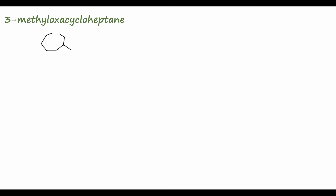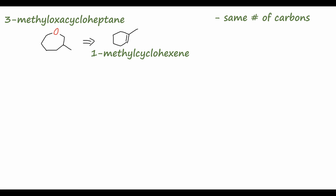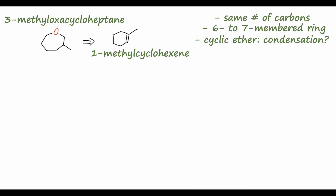Let's look at the more difficult retrosynthesis: the synthesis of 3-methyl-oxacycloheptane, a cyclic ether, from 1-methyl-cyclohexene, our starting alkene. Interestingly, we have the same number of carbons in both, but we do have a ring enlargement — starting with a six-membered ring and ending with a seven-membered ring. So we'll have to break the six-membered ring and reform a seven-membered ring. We've also added oxygen, so we'll have to hydrate or oxidize the alkene to get that oxygen atom in our product.